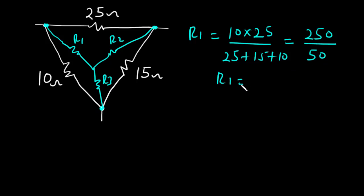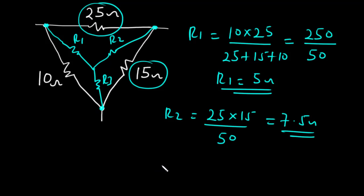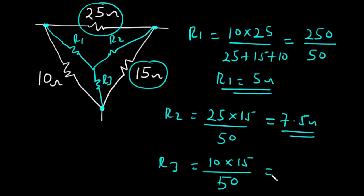So R1 is going to be 250 divided by 50, which equals 5 ohms. For R2, it is 25 multiplied by 15 divided by 50, which gives 7.5 ohms. Then R3 is equal to 10 multiplied by 15 divided by 50, so R3 is going to be 3 ohms.